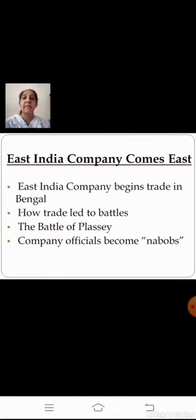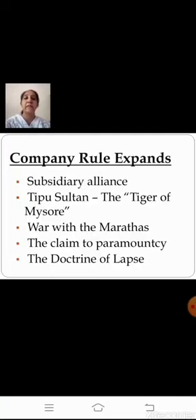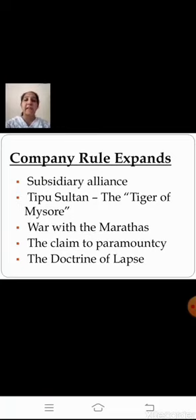Under 'East India Company Comes East,' we learnt about how the East India Company began trade in Bengal, how trade led to battles — including the Battle of Plassey and the Battle of Buxar — and how company officials became nabobs. Under 'Company Rule Expands,' we learnt about the Subsidiary Alliance policy, Tipu Sultan (the Tiger of Mysore), and the Anglo-Mysore Wars, in which Tipu Sultan was killed defending his capital Seringapatnam during the Fourth Anglo-Mysore War. We also covered the Anglo-Maratha Wars and the policy of Paramountcy, by which supreme authority was given to the British.